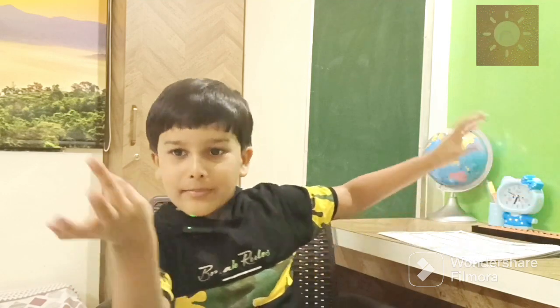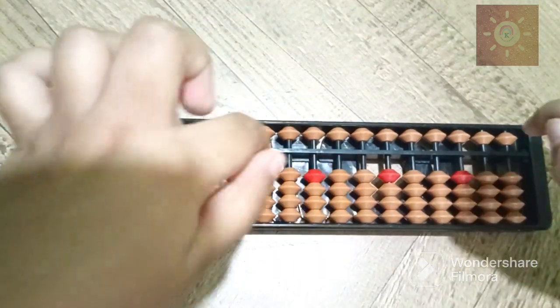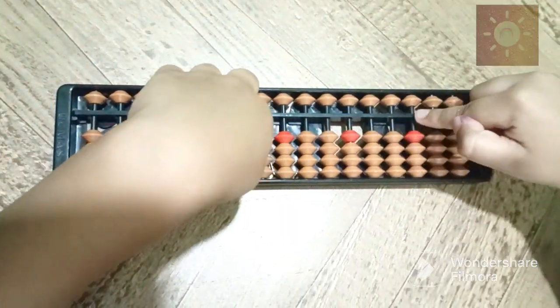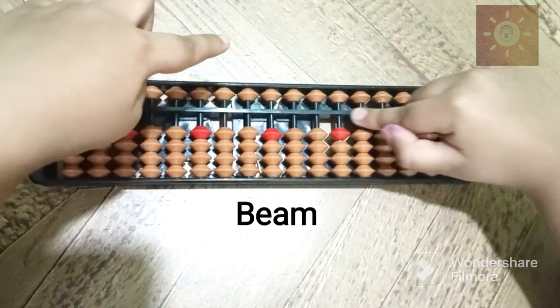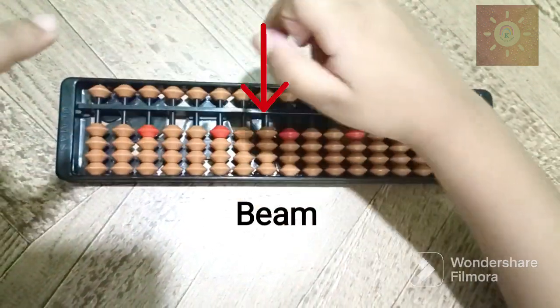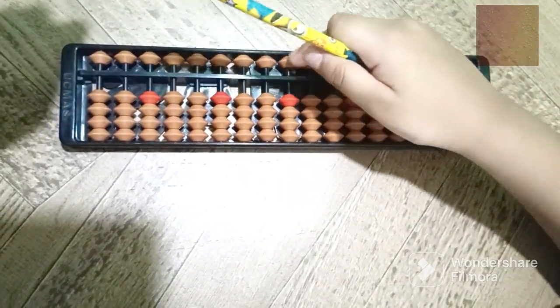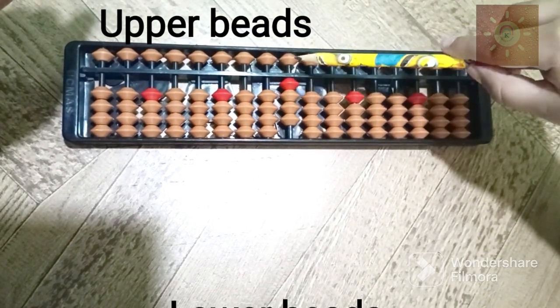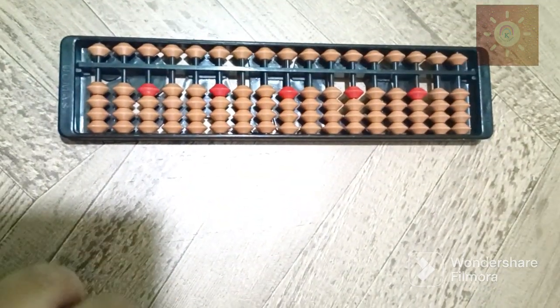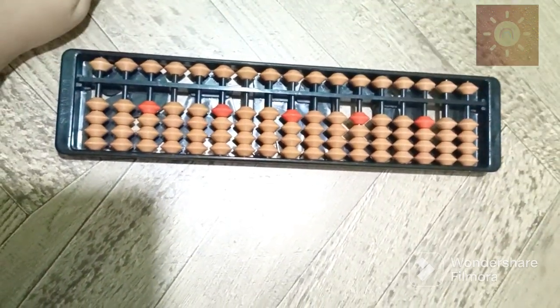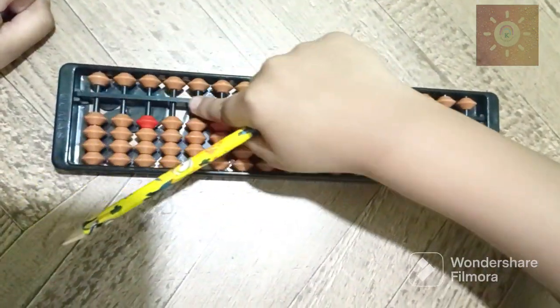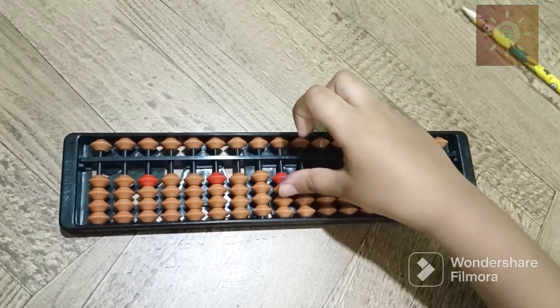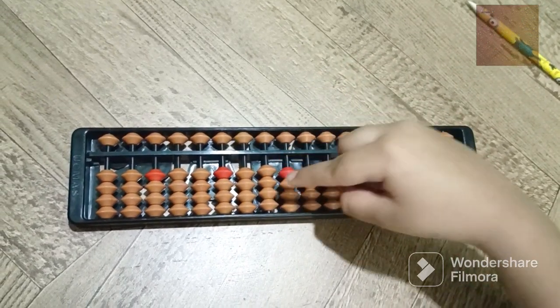Now I will show you how it works. Friends, this is an abacus kit. This is a beam, these are upper beads, these are lower beads. We can add like this and subtract like this.